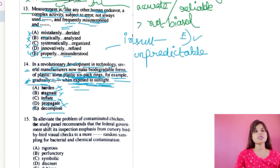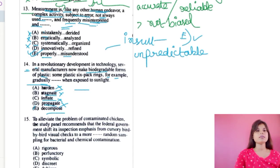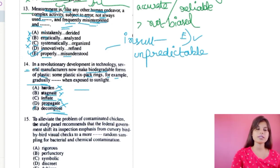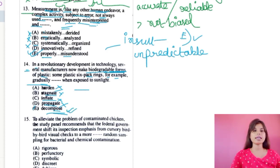Option E is 'decompose.' Decompose means they break down into small particles and finally mix up with the soil. They are talking about biodegradable forms of plastic — plastics which finally get mixed up with the soil and don't remain or accumulate on it. So they will decompose, just like any other natural biodegradable things. Therefore, option E — decompose — is the correct answer for question 14.